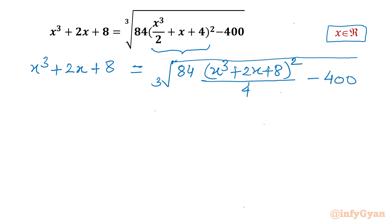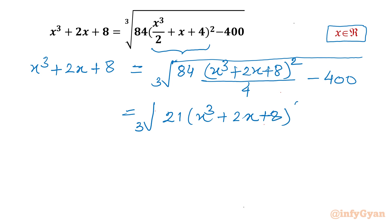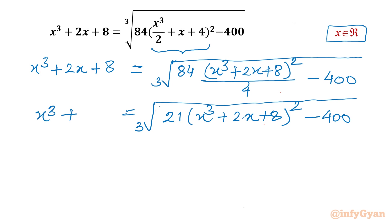Now I can cancel 84 with 4, so it will become 21. So I can write: cube root of 21(x³ + 2x + 8)² − 400. And I will write our LHS also, so it is x³ + 2x + 8.